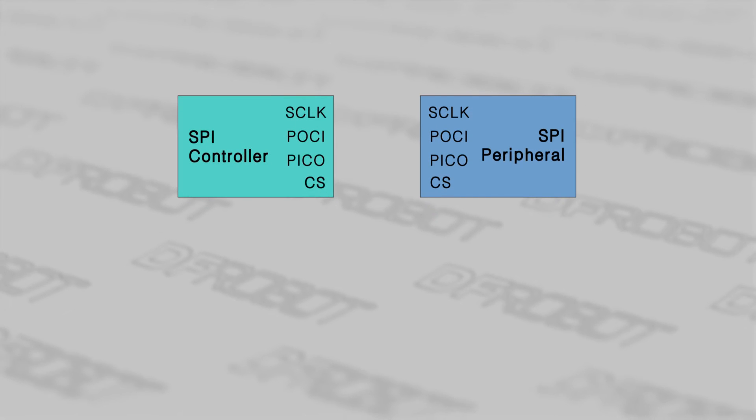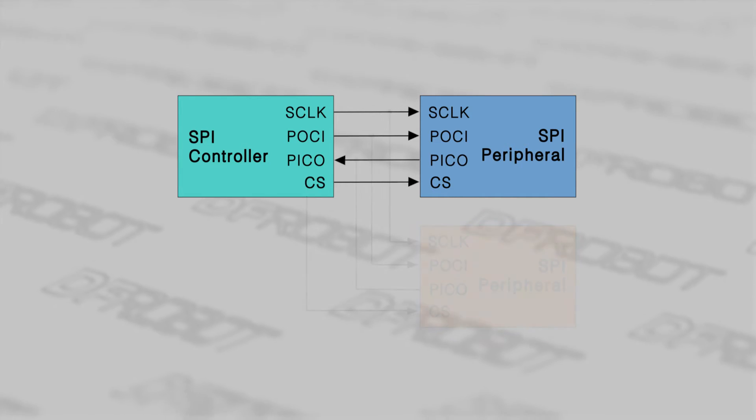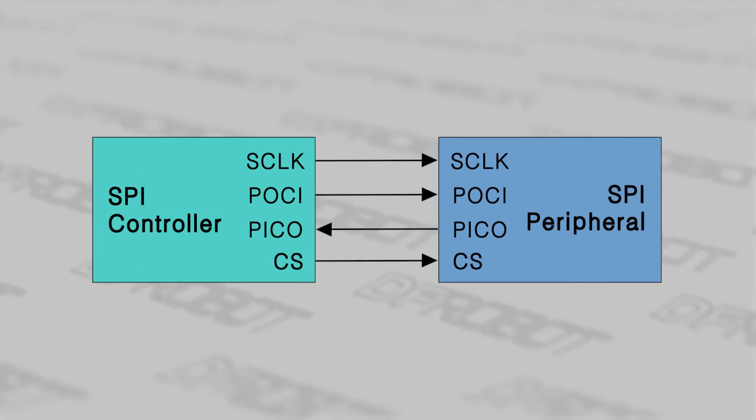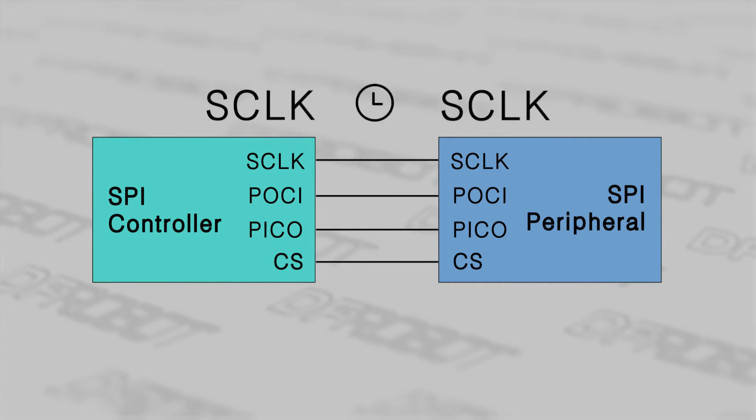SPI usually uses controller peripheral architecture with a single controller and multiple peripherals. Typically, all SPI devices require at least four wires: PICO (peripheral in, controller out), POCI (peripheral out, controller in), SCLK (serial clock), and CS (chip select).